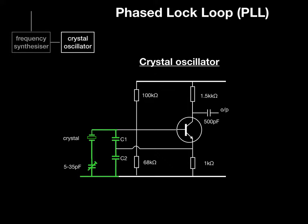Note the 5 to 35 picofarad trimmer capacitor in series with the crystal — that's there to make small calibration adjustments, as the capacitor can pull the crystal's frequency slightly one way or the other. You might wonder how the oscillatory circuit gets power. Recalling the emitter-follower concept: as current flows through the emitter-collector circuit, the voltage at the top of the 1kΩ resistor will change, and that swinging voltage provides energy to the oscillatory circuit.